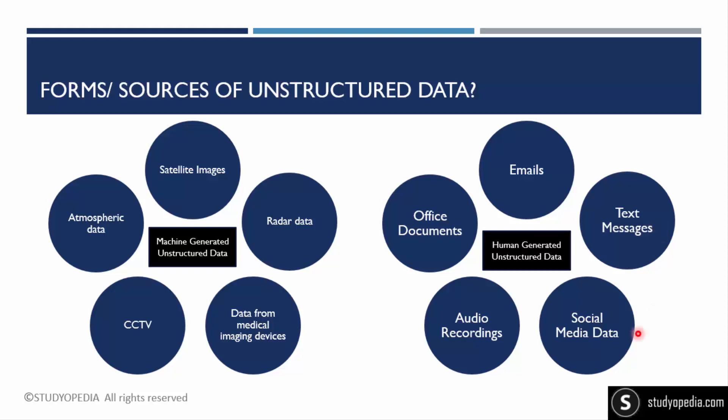Social media data is unstructured — a tweet may have an image, video, or text; a Facebook post may have an image, video, or text in different combinations. Audio recordings — podcasts and WhatsApp voice messages — also come under unstructured data. Office documents like Word and Excel files are also unstructured, as they can include images and even videos.